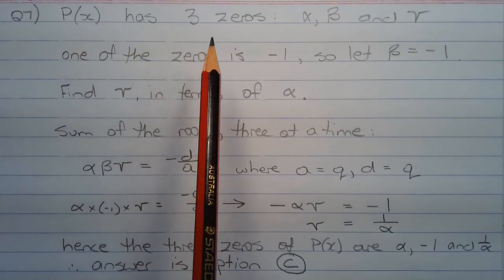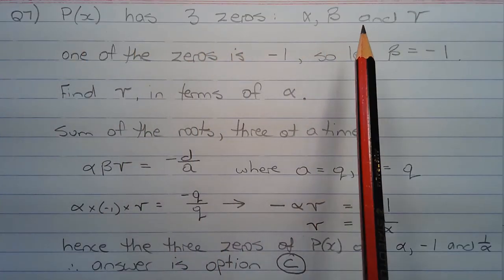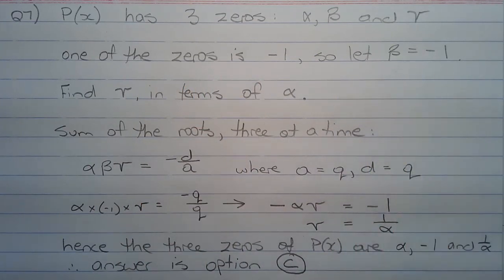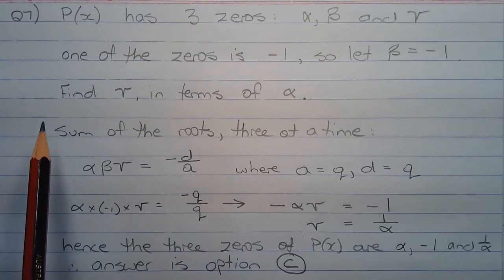P(x) has three zeros: α, β, and γ. One of the zeros given is -1, so we're going to let β = -1. The idea is to find γ in terms of α.